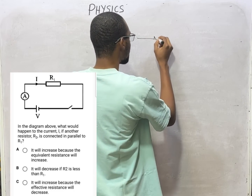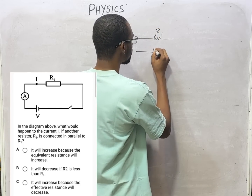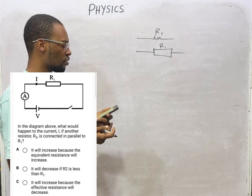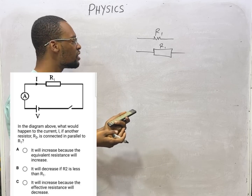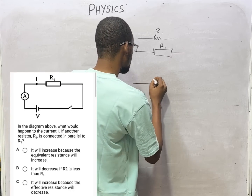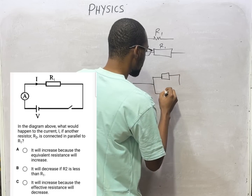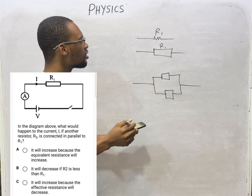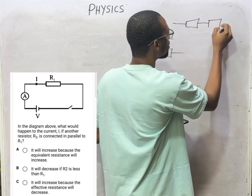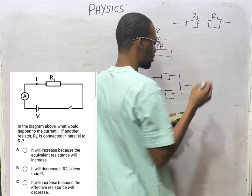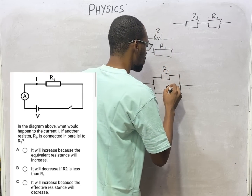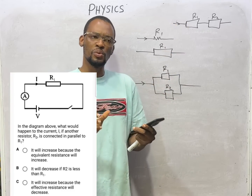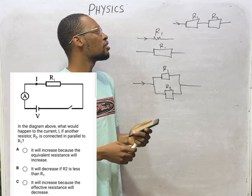Now, we have this one resistor — R1. They said if another resistor is connected in parallel with the already existing resistor. So meaning in this circuit, there is a resistor and something like this happens — this is parallel. If they had said that another resistor is connected in series, series would be something like this: here would be R1, here would be R2, and current is flowing this way.